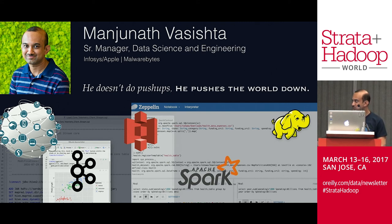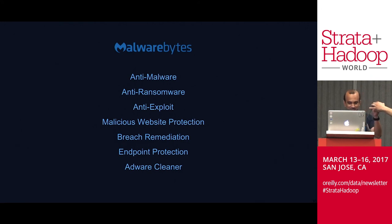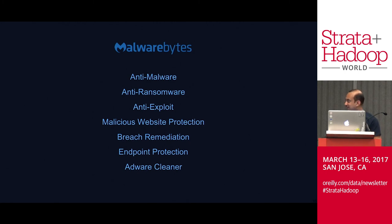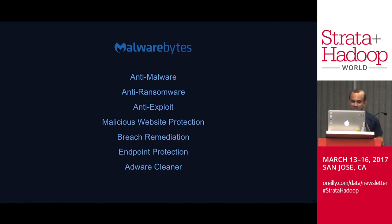Before joining Malwarebytes eight months ago, I was working at a technology services company called Infosys building data warehousing, business intelligence, big data, and data science solutions for Apple. At Malwarebytes we have multiple technologies to protect our customers from the world's most harmful internet threats — anti-malware, anti-ransomware, anti-exploit, malicious website protections, and products for business enterprises like breach remediation, endpoint protection, and adware cleaner. The goal is to provide layers of protection so customers can navigate the internet without any issues.